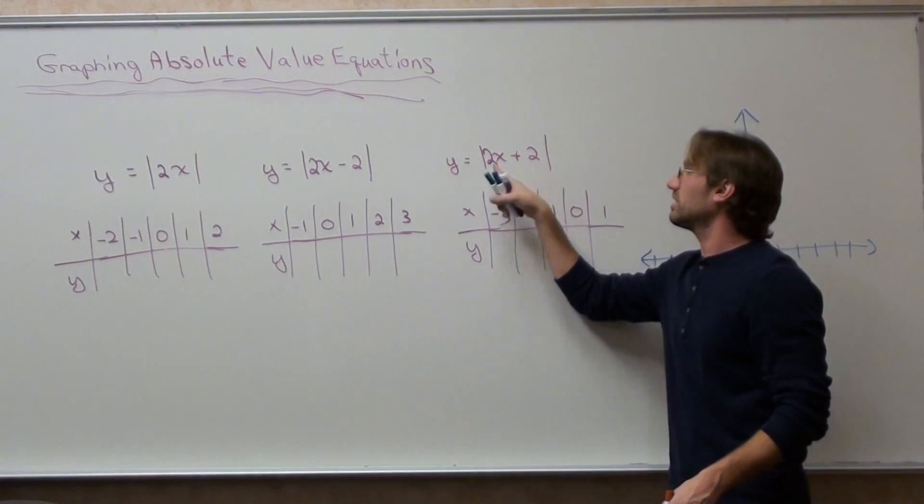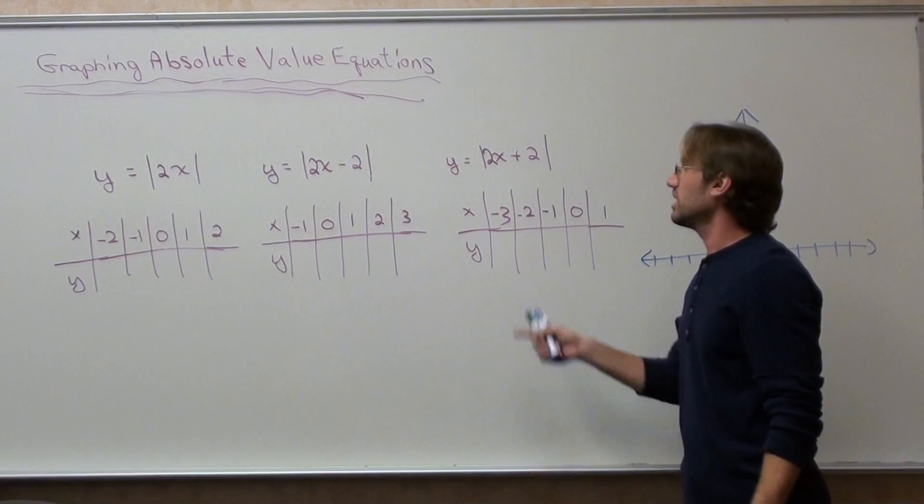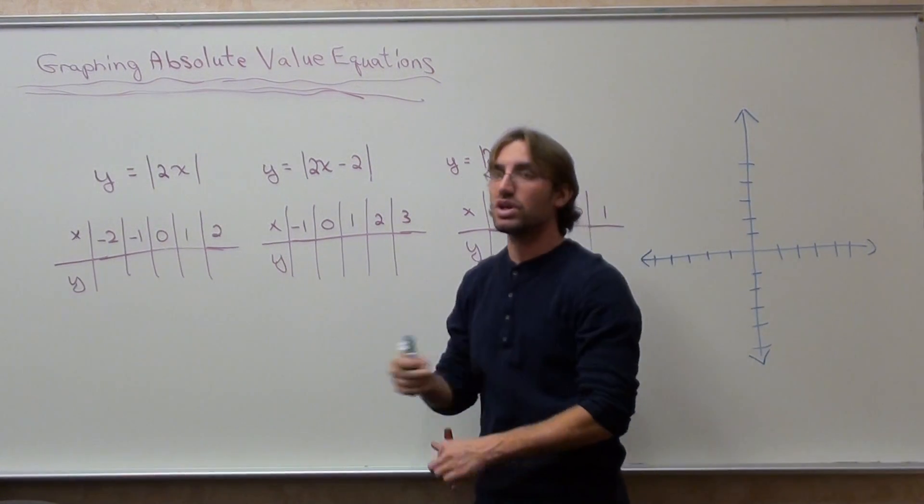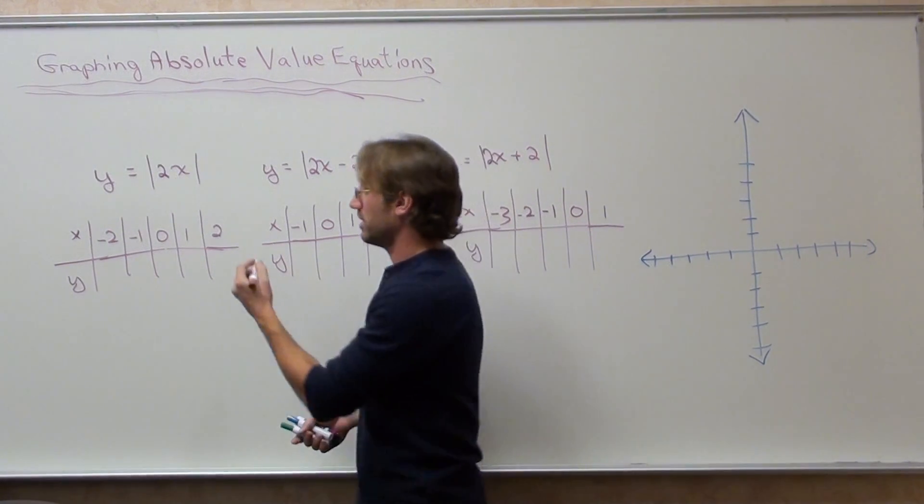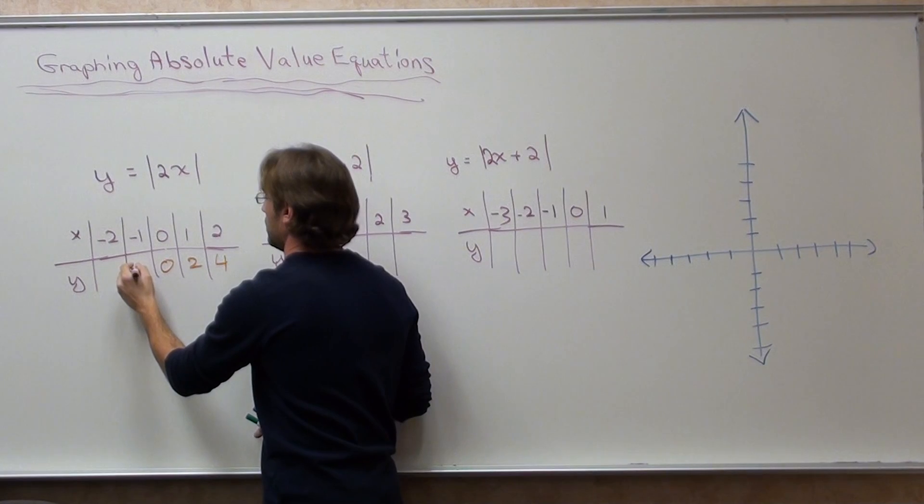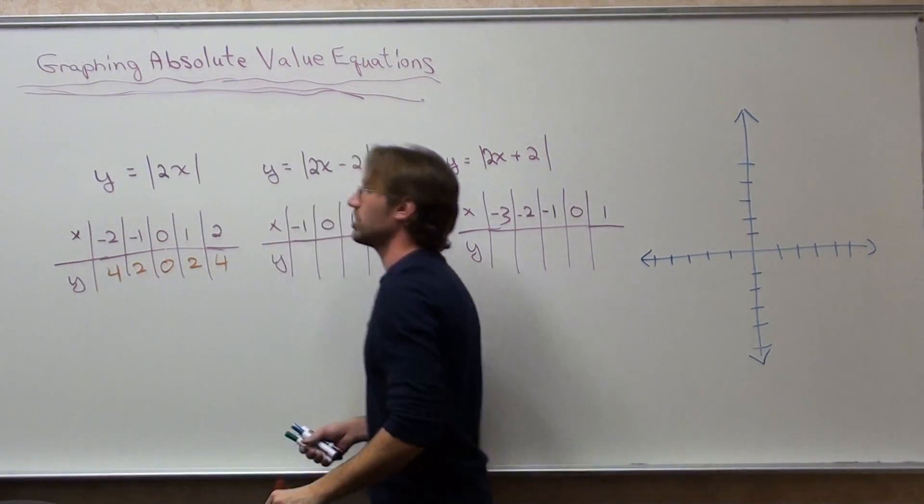And this one is negative 2 divided by 2, which is negative 1. So when I substitute in my values, and you can go ahead and do this yourself, that's what you get for the first one.